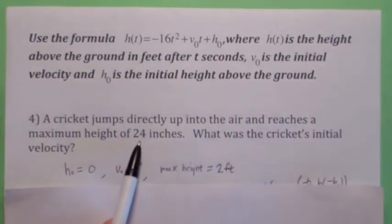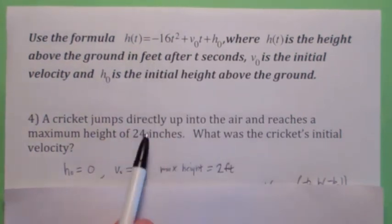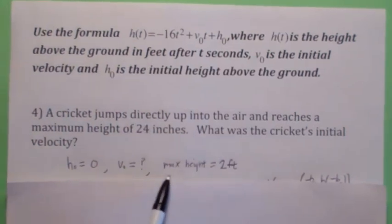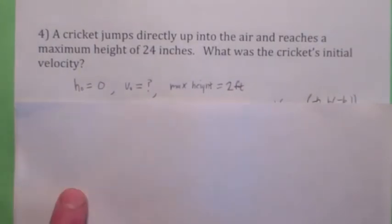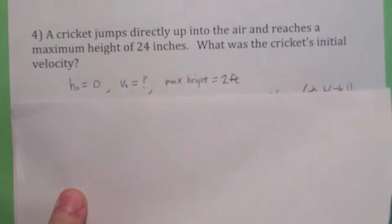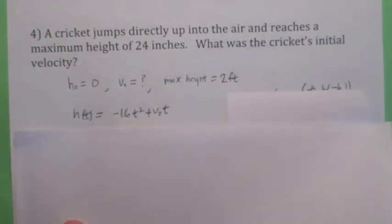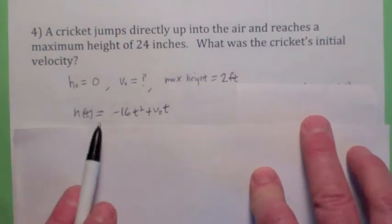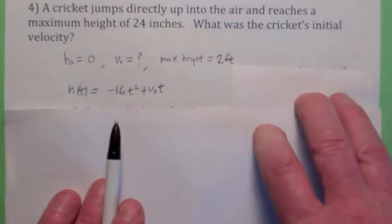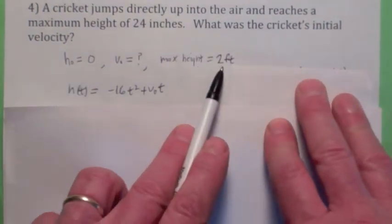So in your science classes, especially physics and chemistry, they love to do that to you. Make sure your units match up. So you have to change this to 2. So they're giving us the maximum height is 2. And they want us to find the initial velocity. Again, it seems like they're not telling us enough information. So this is where we're at. We know that h₀ is zero because the cricket's jumping from the ground. So how would we use the fact that the maximum height is 2?